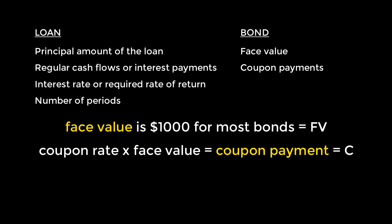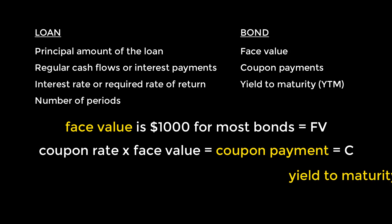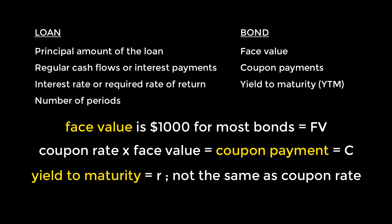Bonds also have an interest rate, or a required rate of return, which is not to be confused with the coupon rate. The coupon rate is one of those standardized terms attached to the bond and stays constant, but the interest rate is determined by the market and can fluctuate over time. This can alter the value of the remaining cash flows of the bond, so it's a critical determinant of the bond's value. With respect to bonds, this rate is called the yield to maturity, which we'll abbreviate to YTM.